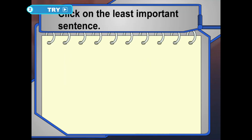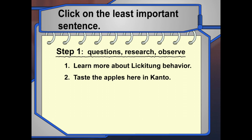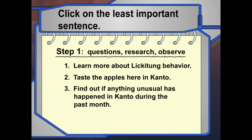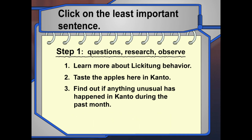Start with step one — I'll write down what we need to find out: learn more about Lickitung behavior; taste the apples here in this part of Kanto; find out if anything unusual has happened in this area during the past month; and find out what other Pokémon are in this area. If you don't agree with something on my list, click on what you think isn't important to find out right now. It isn't important to find out what other Pokémon are in the area right now.